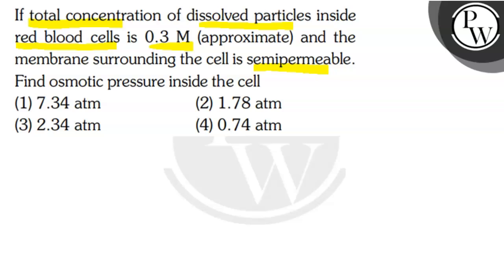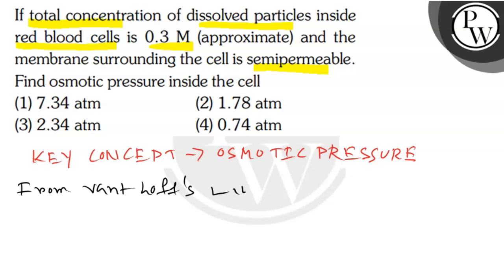So what is the key concept here? The key concept is osmotic pressure. From Van't Hoff's law of osmotic pressure, the osmotic pressure pi is equal to i into c into r into t.